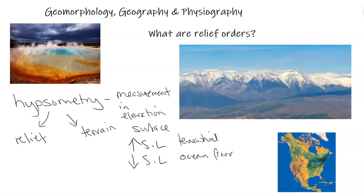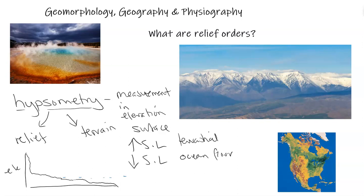Hypsometry covers terrestrial elevations and the ocean floor, including all the different landforms there — the abyssal plain, trenches, and canyons. It shows a profile of elevation from the highest Himalayan mountains, down through average hills and mountains, beaches, the continental shelf, and into the ocean trenches. The average elevation of land above sea level is around 800 meters, but the average overall land is actually below sea level — there's just so much ocean versus land.